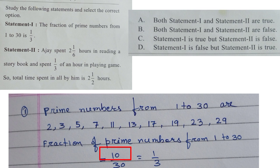10 is the numerator. What is the denominator? That is total numbers from 1 to 30. These are 30. So fraction of prime numbers from 1 to 30 is 10 by 30. Cancelling with 10, we get simplest form 1 by 3. So Statement 1 is correct.